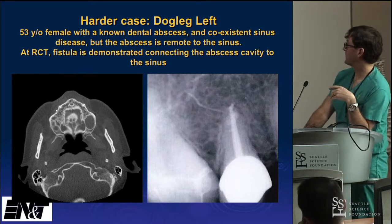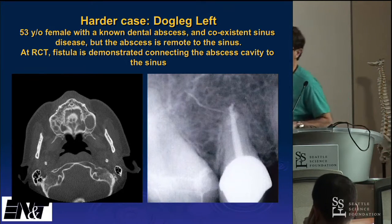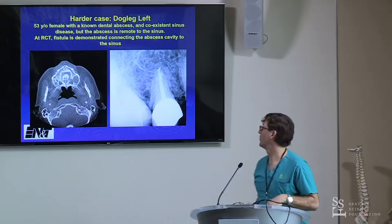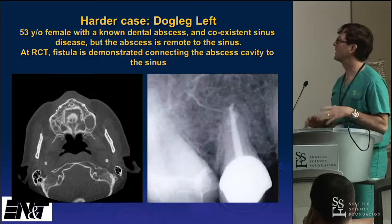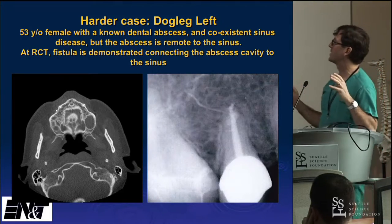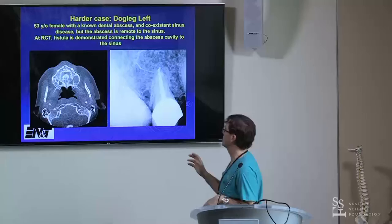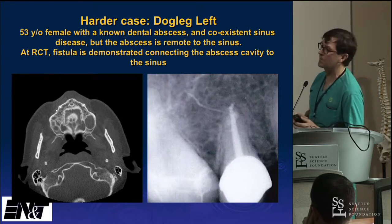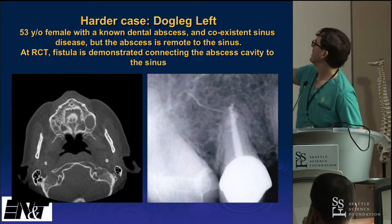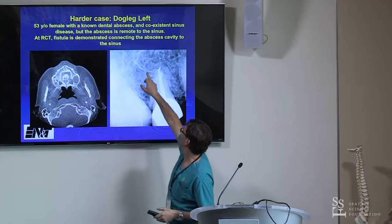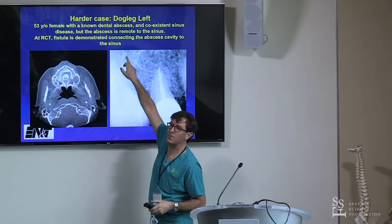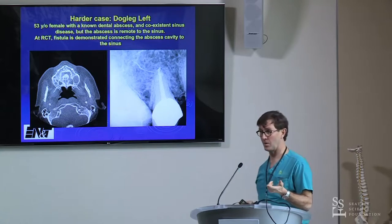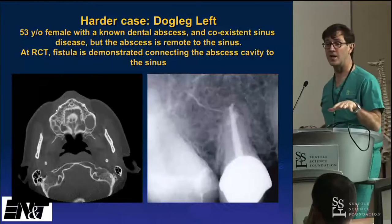A harder case involved a periapical abscess on one of the anterior teeth, far away from the sinus disease. We never thought they were related until a root canal was performed and a fistula was clearly identified going from the tooth root into the sinus. Once the root canal was done, the sinusitis resolved.